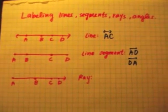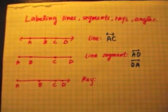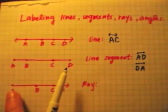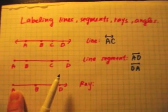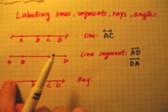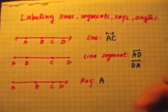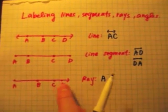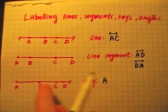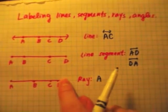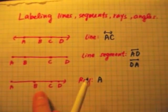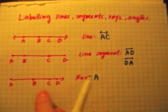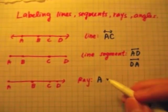The ray is a little bit trickier. For the ray, you need to always start with the endpoint. Your first letter should always be the endpoint. In this case, the endpoint is A, so I need to start with the letter A. For the second letter, I can choose whichever letter I want, because the ray extends forever in that direction. So I can choose AB, AC, or AD. I'm going to go with B this time.